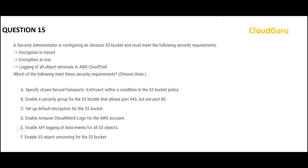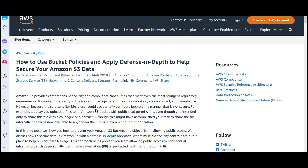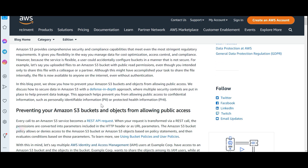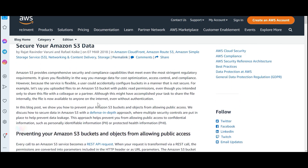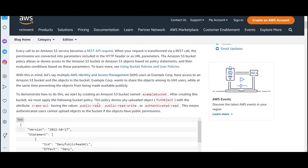Next question: you are a security administrator configuring S3 buckets. You need to ensure encryption in transit, encryption at rest, and logging of all object retrievals in CloudTrail. Let us go through the options. The first option specifies Secure Transport set to true within the condition in the S3 bucket policy. There is an excellent AWS security blog article on encryption at rest and in transit — I strongly recommend reading those sections.